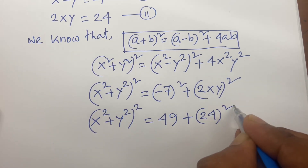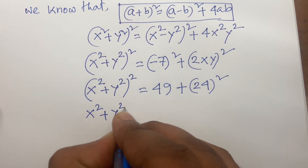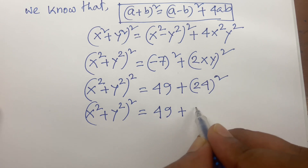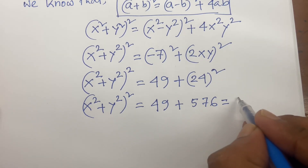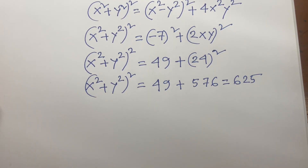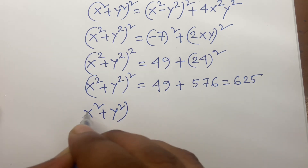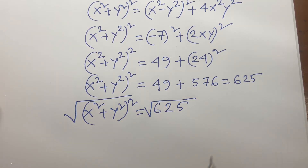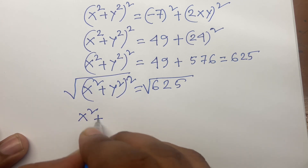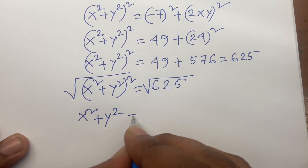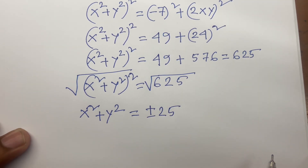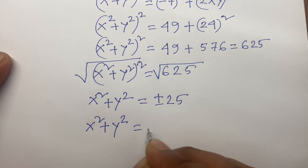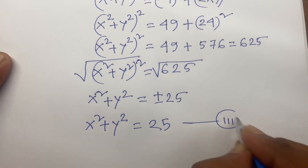So (x² + y²)² equals 625. Taking square roots on both sides, x² plus y² equals plus or minus 25. But since x and y are real numbers, x² plus y² equals positive 25 — that is equation 3.